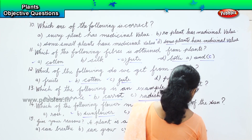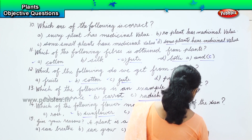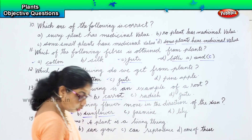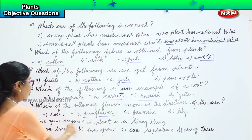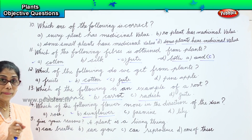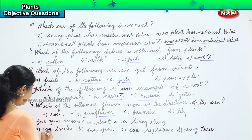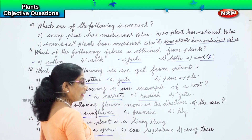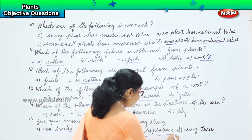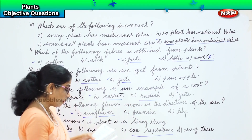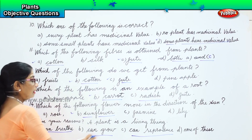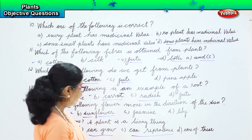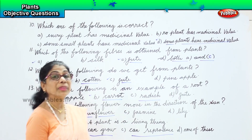Option D says none of these. Now you are going to give your own reason. A plant is a living thing - yes. Can a plant breathe? Yes. Can a plant grow? Yes. Can a plant reproduce? Yes, other plants come out of it. So for all three reasons - it can breathe, it can grow, it can reproduce - we say a plant is a living thing.